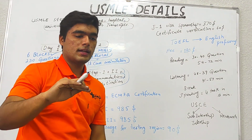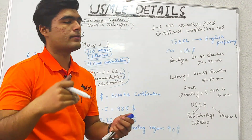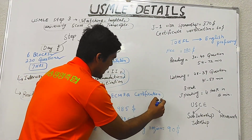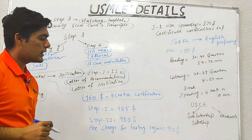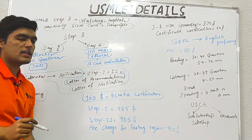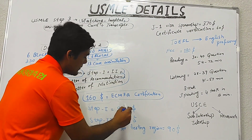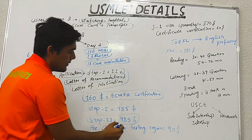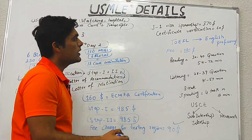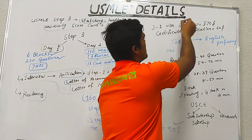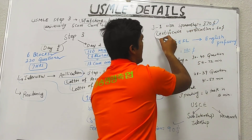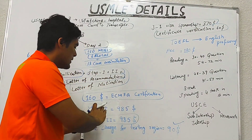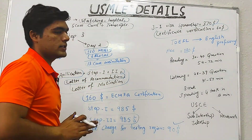Regarding how much you have to spend for the USMLE exam: ECFMG certification fee is $160, Step 1 fee is $985, Step 2 fee is $985, fee surcharge for testing region is $90, J1 visa sponsorship is $370, and certification verification is $60. These are the total costs you have to spend on the USMLE exam.